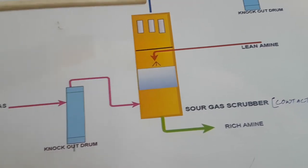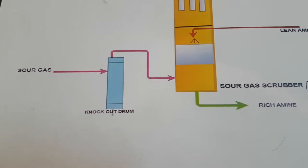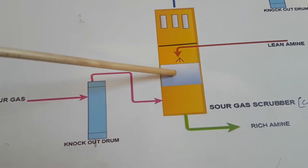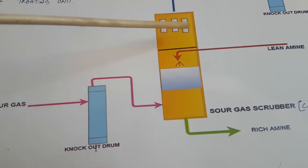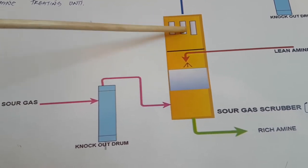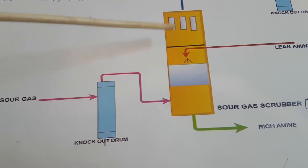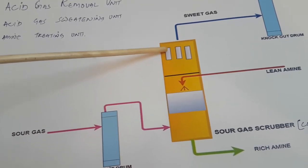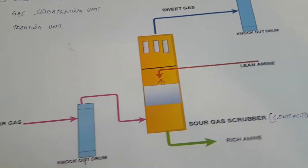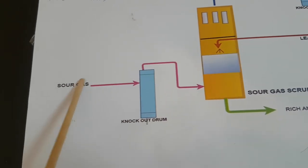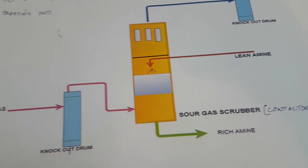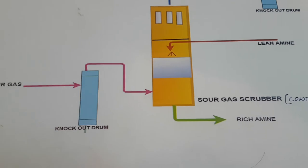In the contactor, lean amine contacts the sour gas and makes it sweet gas. The column has packing, a grid at the bottom, a strainer, and a filter which removes condensed liquid carried over by the gas. With the help of this filter, dry gas passes through, and any remaining condensed particles are removed in the knockout drum. For the gas we use a recycle gas compressor to send gas at high pressure, and for lean amine we use a pump to distribute and circulate it continuously. Once lean amine becomes rich amine, it gets transferred to the amine regeneration unit.